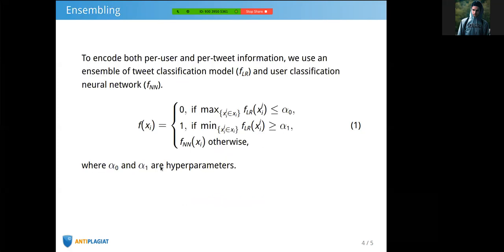To encode both per-user and per-tweet information, we also considered an ensemble of a tweet classification model that gives the probability of a tweet being fake and a user classification neural network.